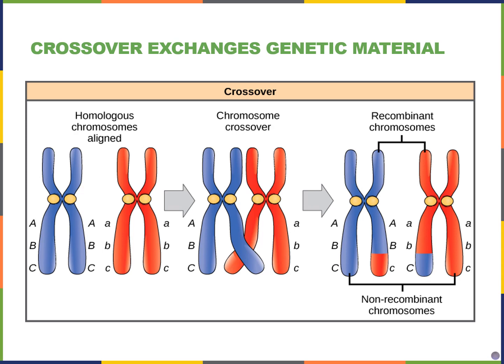Crossing over is one form of increasing genetic variation. In this picture from the book, dad's chromosome is shown in blue and mom's in red — two of each because these are identical sister chromatids generated during the S phase of interphase. The letters shown here are called alleles, which are versions of a gene. Let's pretend A is hair color, B is eye color, and C is height — tall or short. This is oversimplified, but gives basic examples.